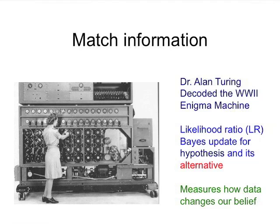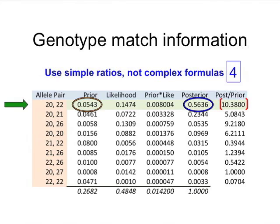The likelihood ratio is a measure of change — the same way you can observe change in energy or other quantities in science, this is how the data changes belief. There are many ways to compute this. One of the simplest, first described in 1938 in Essen-Möller's paper on paternity testing, is to take the posterior probability shown in blue on the first row divided by the prior probability of the genotype shown in brown. You get a number like around 50% divided by 5%. The last column shows that posterior-to-prior ratio for all the listed allele pairs. For some values the likelihood ratio goes up, for some it goes down. In this case, the number is around 10 — that's the change in probability.